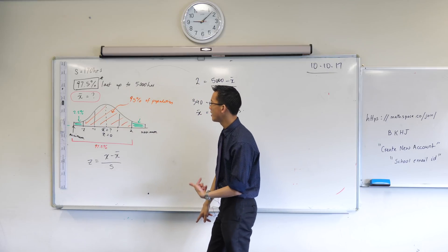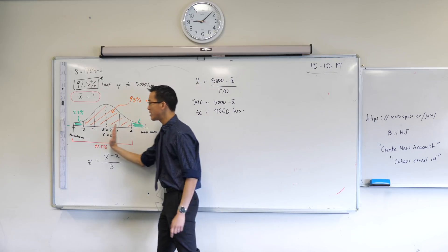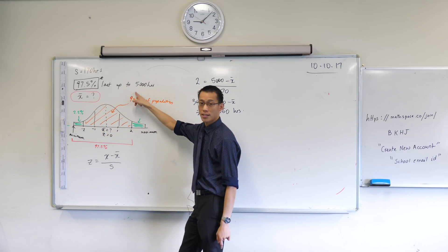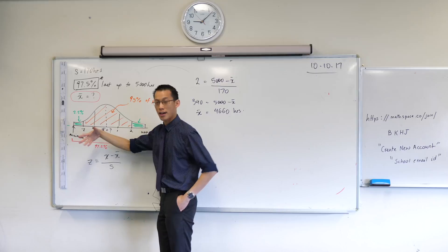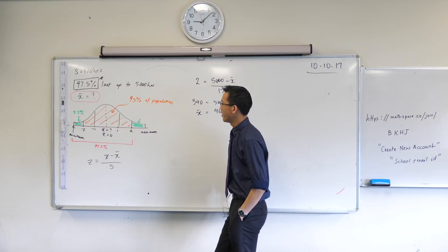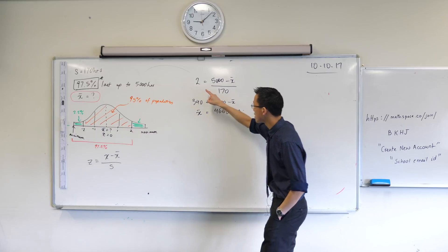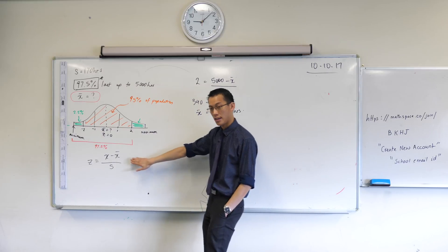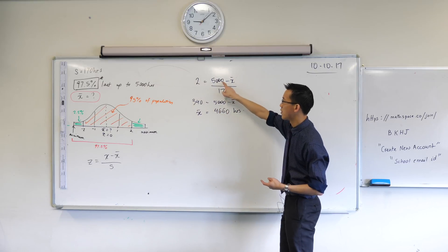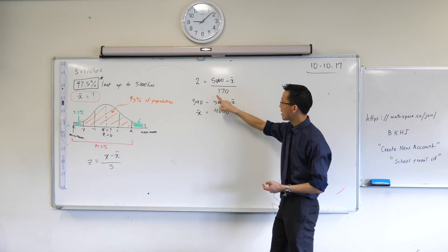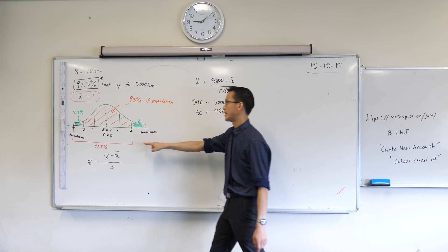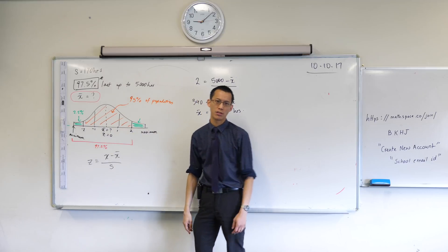You can see that here is 97.5% of all of the light globes, and they will last up to 5,000 hours. Then finally, I used the z-score formula here, and I slotted in all the information which came from the question, namely the 5,000 and the 170, and also from my logic, my inference, the 2, working out how far the population could go.